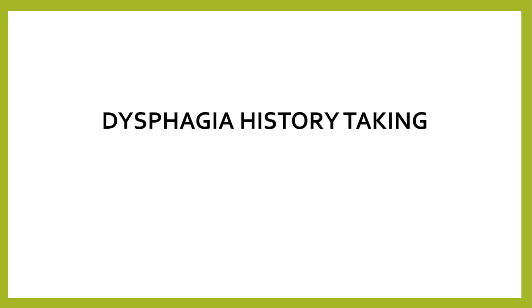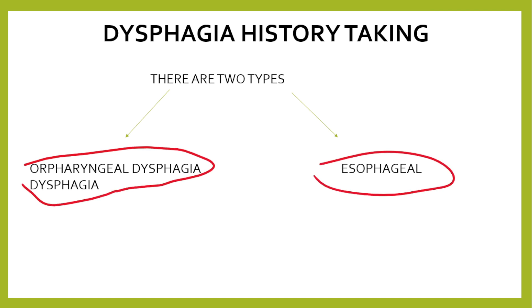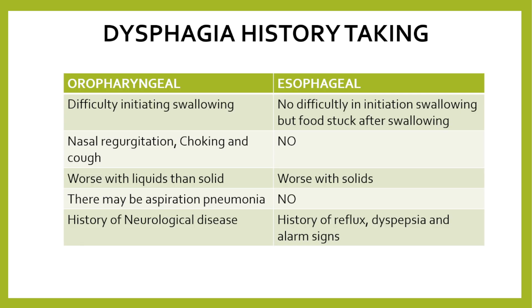Welcome to Medicine Handy Point. Today we will discuss a patient with dysphagia and how to take history from the patient. Dysphagia is actually of two types: one is oropharyngeal dysphagia and another one is esophageal dysphagia. Now let's discuss both of them one by one. In oropharyngeal dysphagia, there will be difficulty in initiating swallowing.